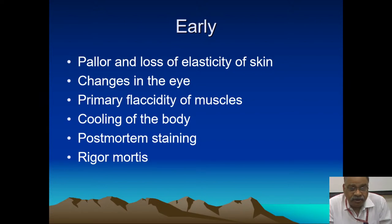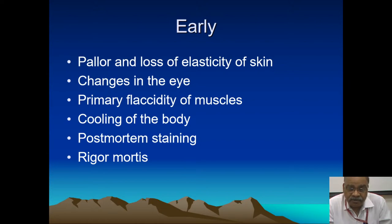Normal intraocular pressure is 14 to 25, but at death it is around 12, and if a person is dead for more than one hour, it becomes about 3. By measuring pressure we can estimate that the person is no more. If the eyes are open, there is opacity of the cornea — it becomes hazy. In early phases it is quite transparent, but with time it becomes very hazy and opaque.